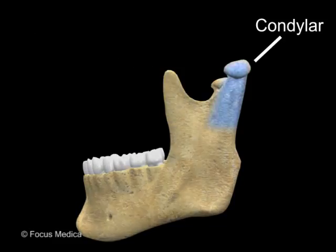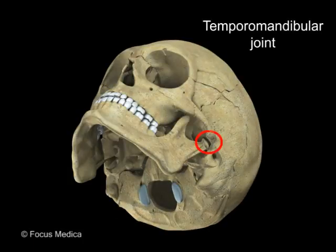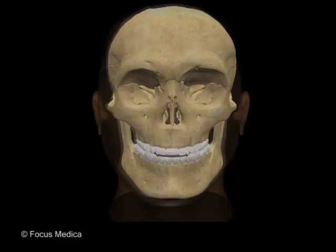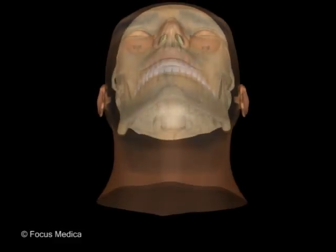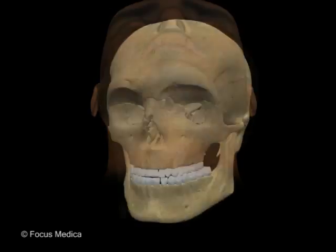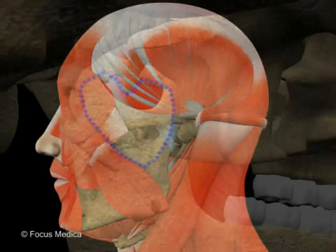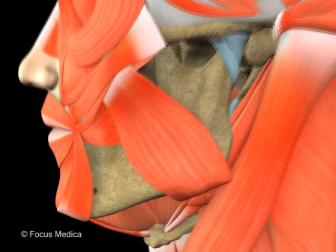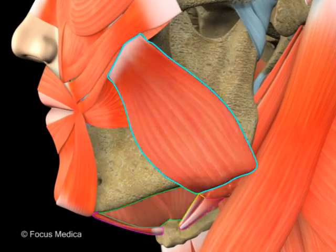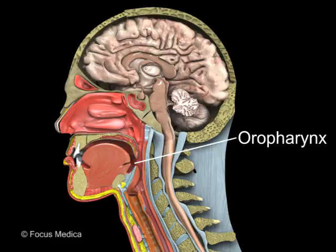The condylar process articulates with the mandibular fossa to form the temporomandibular joint. It is closely related to the submandibular triangle inferomedially and the infratemporal fossa posteriorly. It also provides a bony anchor to several muscles and ligaments of this region and protects the oropharynx.